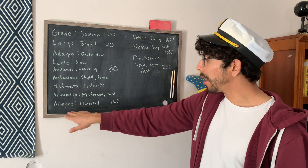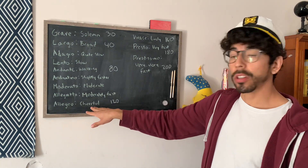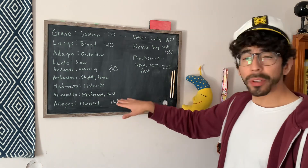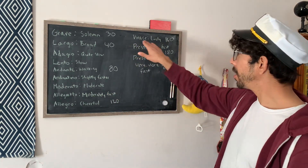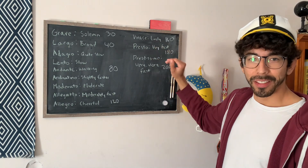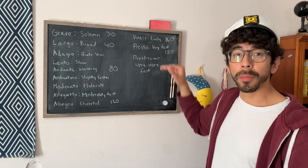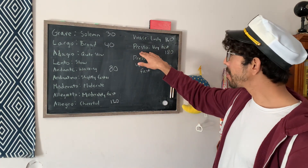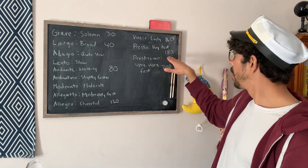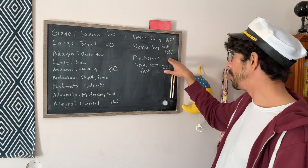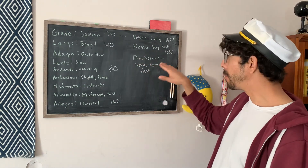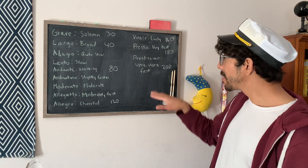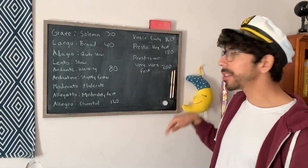Then we finally get to allegro, which is cheerful, which is around 120 BPM. Now we start to get into the faster range with vivace, which is lively — this one's going to be around 160 BPM, so it's getting quite up there. Then we have presto, which is very fast, around 180 BPM. And then we have prestissimo, which is very, very fast, at the 200 mark. I haven't seen too many pieces in prestissimo, but they do exist.